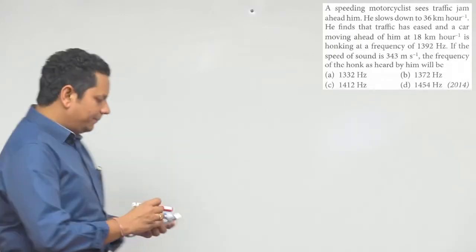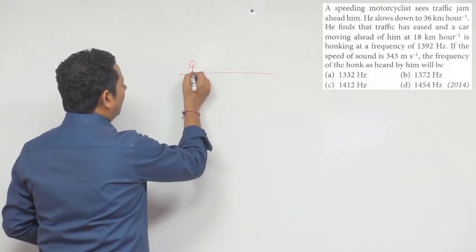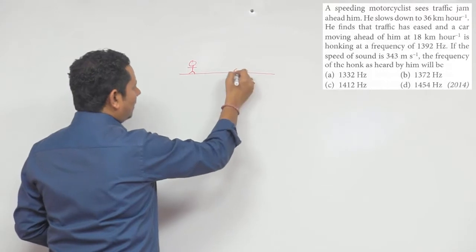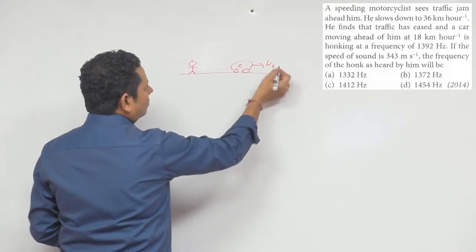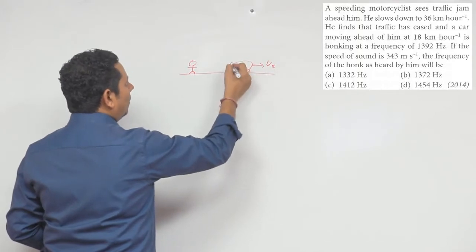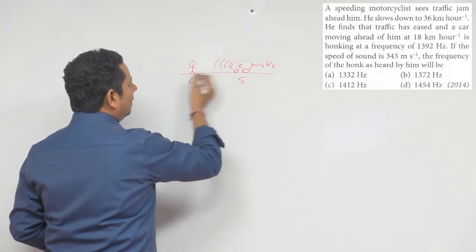First, let's understand the situation. The scenario is: the observer is the motorcyclist on his motorcycle. Ahead is the car moving with velocity Vs. This car honks, and the observer hears this honk.